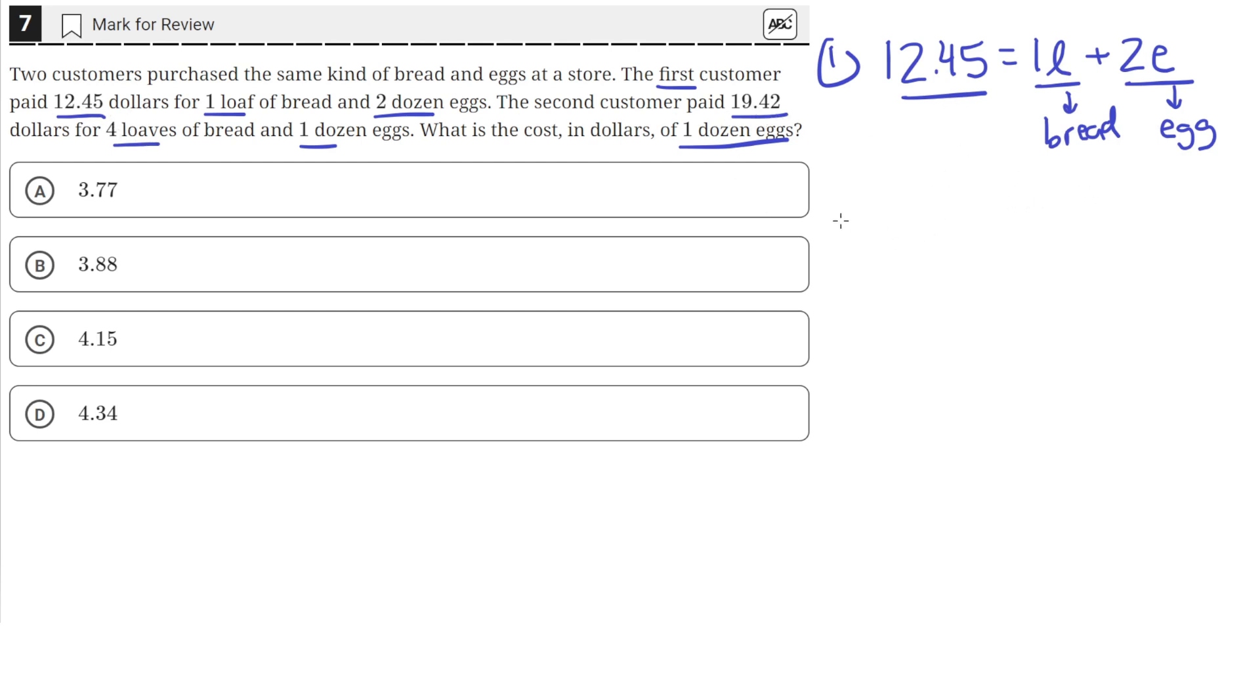The second customer paid $19.42 total for four loaves of bread, so 4L, and one dozen eggs, so one E. Now we have two equations and two unknowns, so we can solve by using substitution.